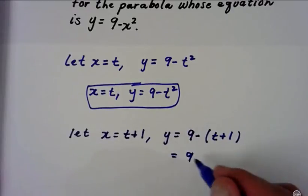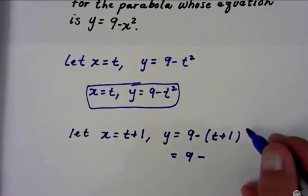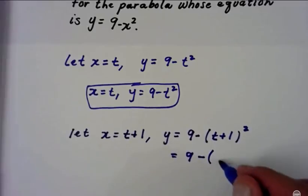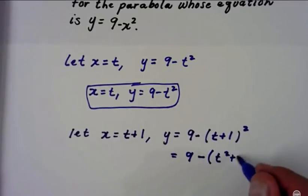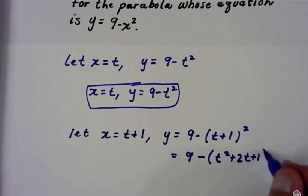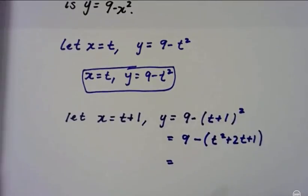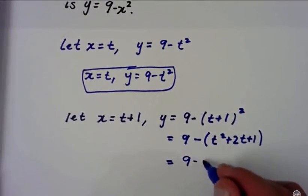We'll have 9 minus—got to square that—t squared plus 2t plus 1. And now that's going to equal 9 minus t squared minus 2t minus 1.